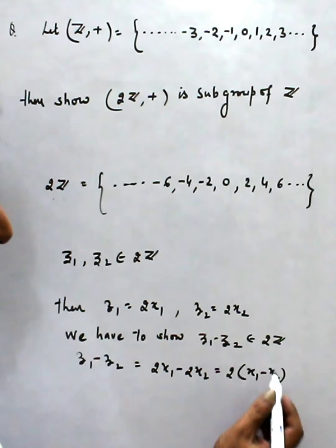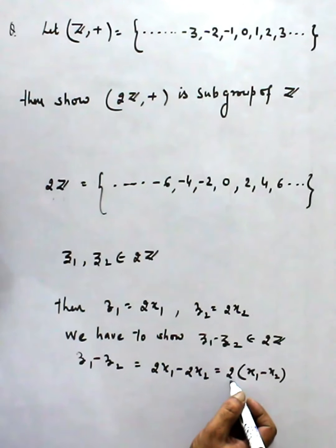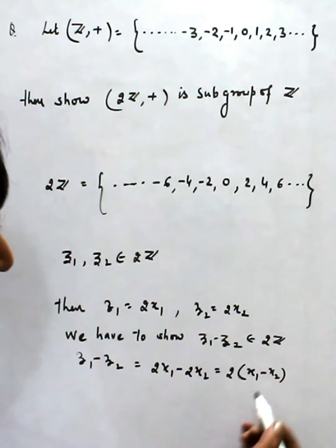That means, this is whatever be the integer, it is a multiple of 2, and in 2Z we have the multiples. That means, simply we can say, this belongs to 2Z.